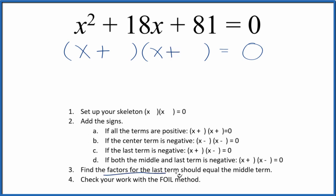After that, we'll find the factors for the last term, 81, and they should add up to the middle term, 18. I know that 9 times 9 is 81, and 9 plus 9 is 18. So all I need to do is put a 9 here and here, and we're done. We've factored the equation x² + 18x + 81.